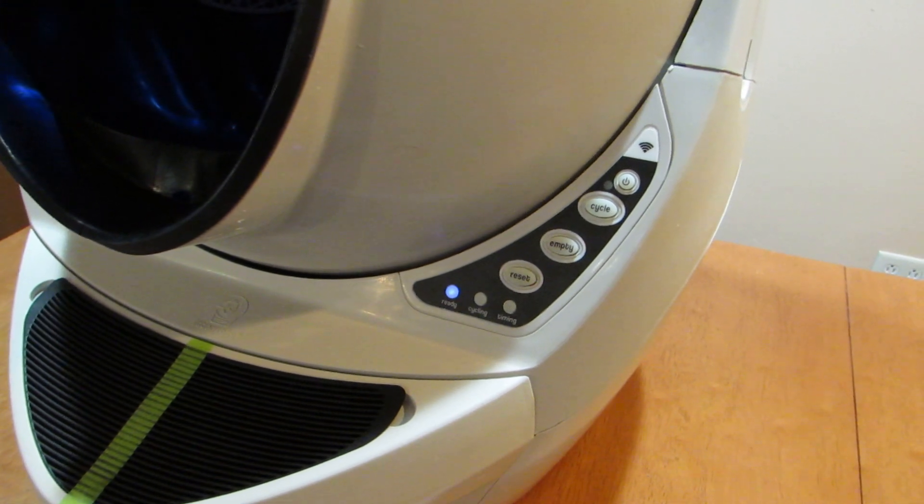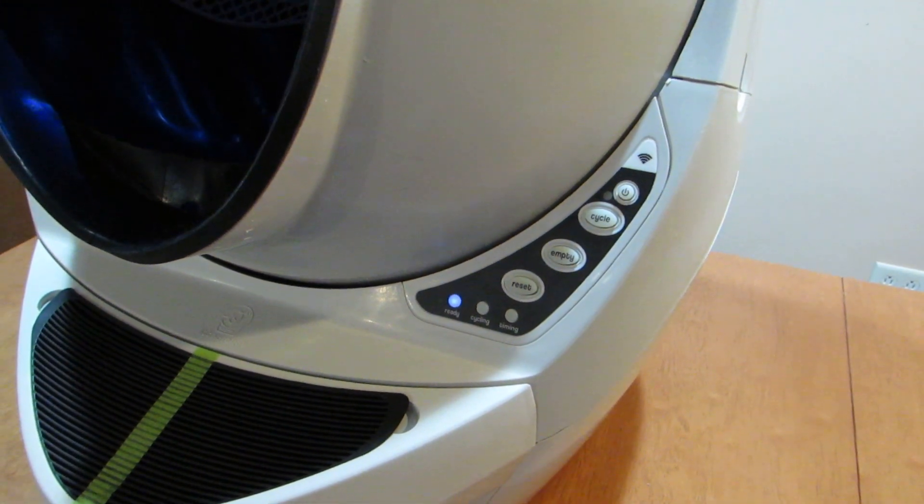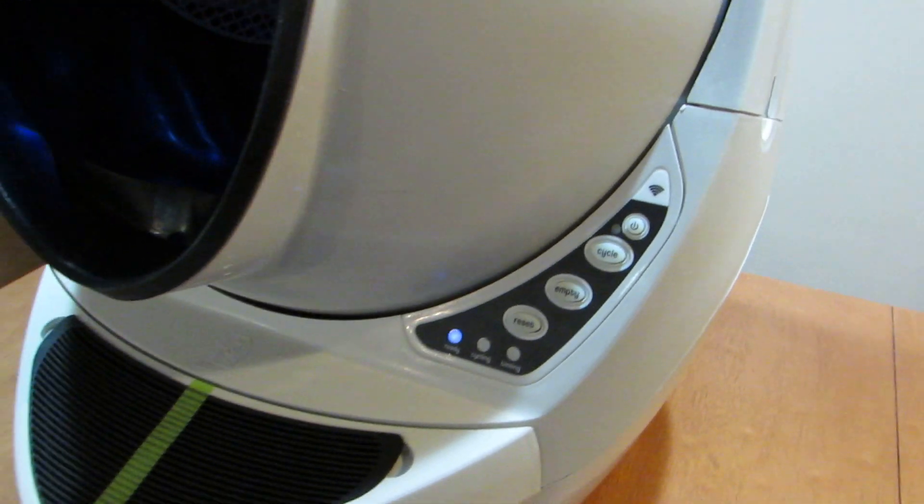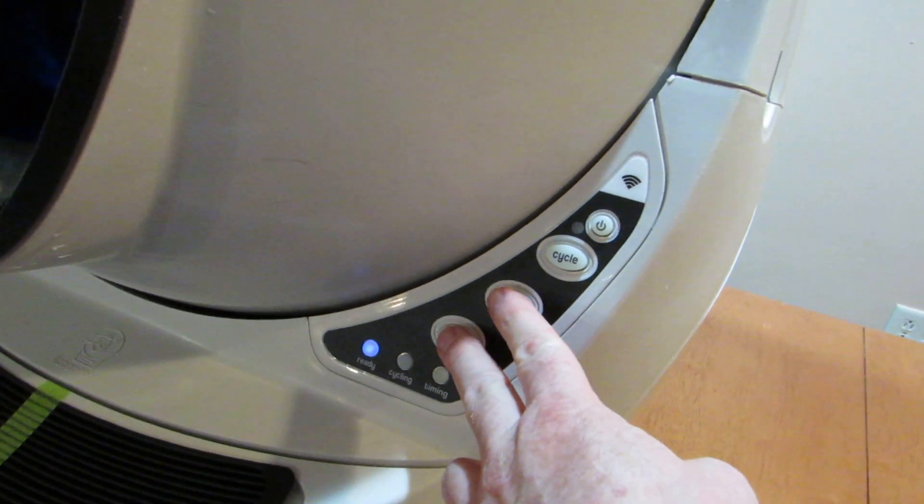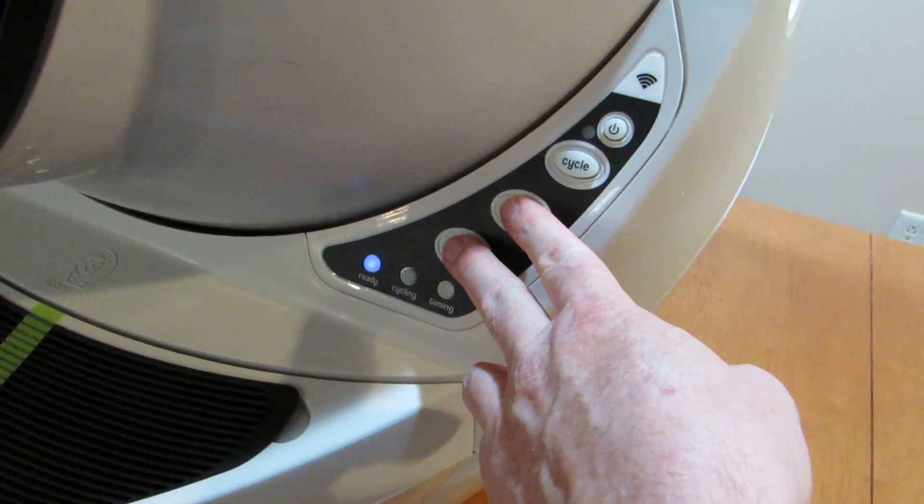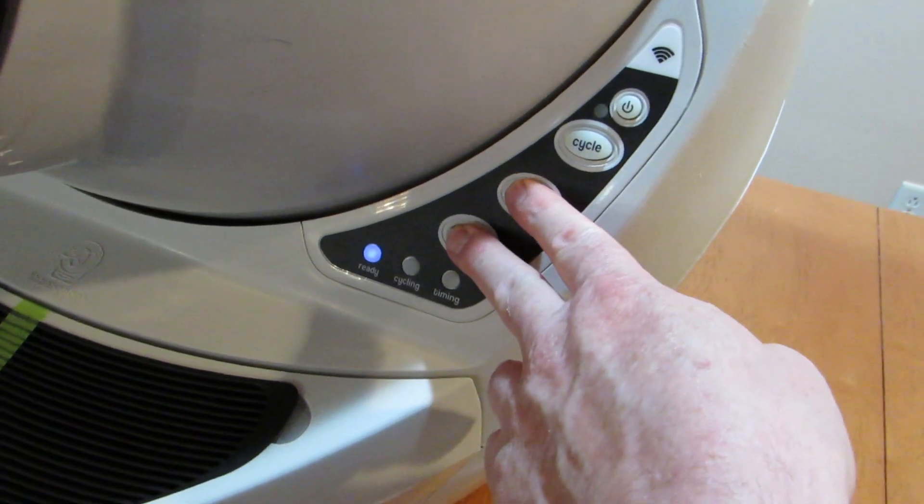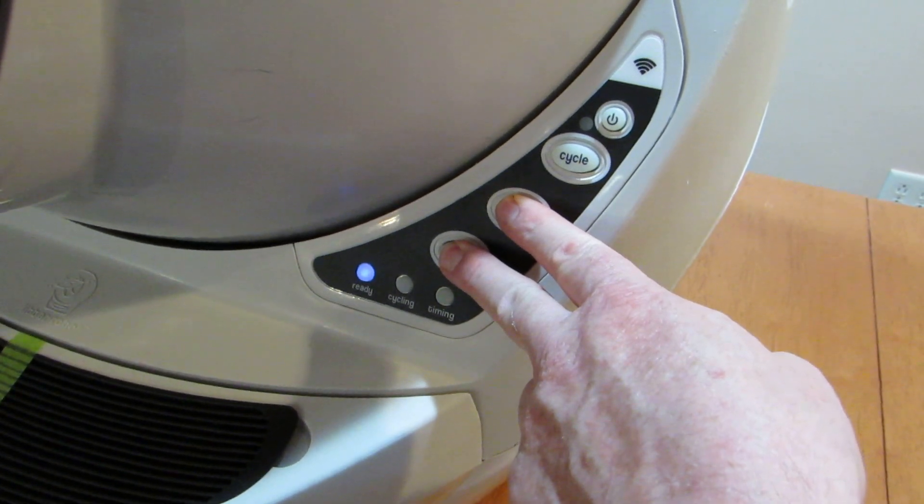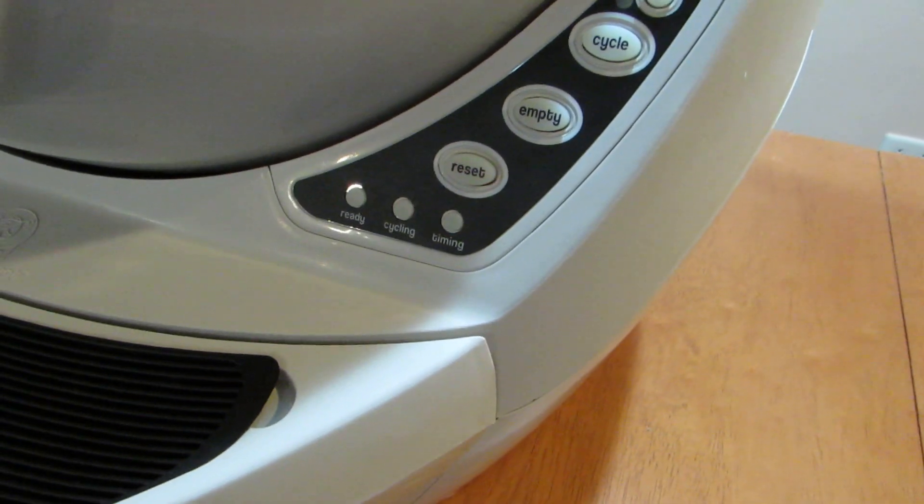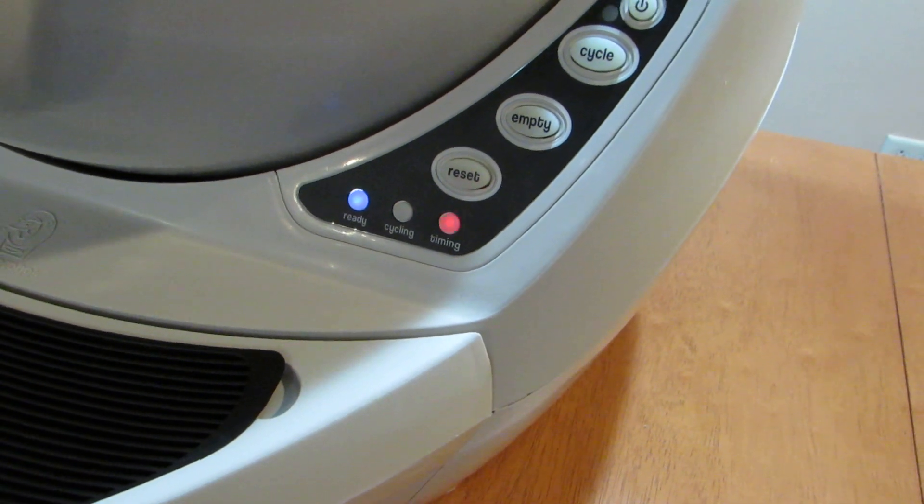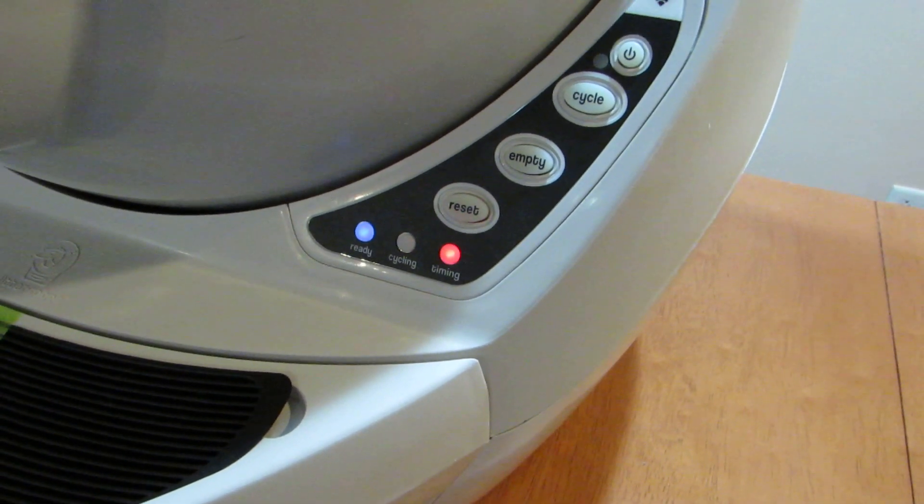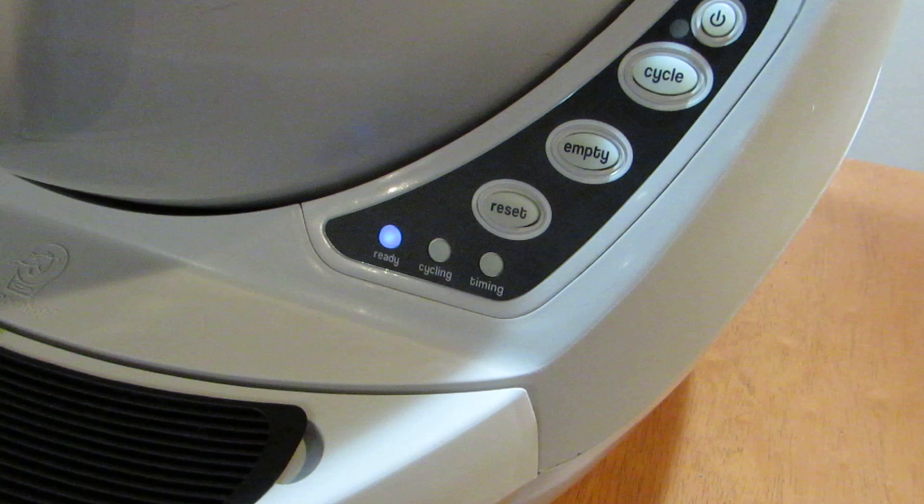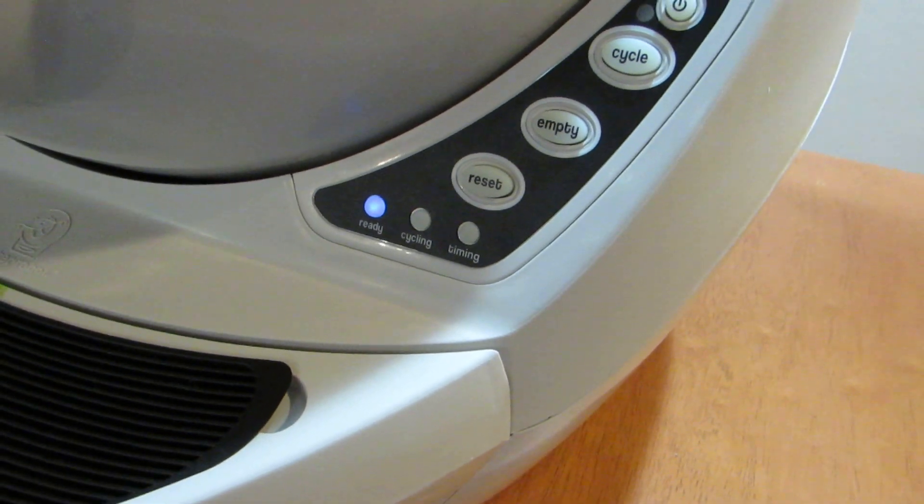Once your Litter Robot 3 has been reassembled and is powered on and at the ready it is time to perform the soft calibration. To do so press and hold the reset and empty buttons for about 6 seconds. 1, 2, 3, 4, 5, 6. At this point you will see the cat timer flash fast and it should return to a ready light. If it doesn't as you can see here just push reset and it will. At this point you are ready to weight test your Litter Robot for functionality.